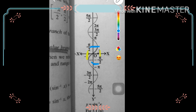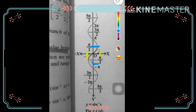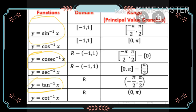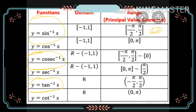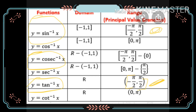This is how we find the domain and range of inverse trigonometric functions. In the table, the circled functions — sin inverse x, cosecant inverse x, and tan inverse x — are three best friends. They always stay together and have similar ranges. The principal value branch of sin inverse x is closed interval minus pi by 2 to pi by 2. The principal value branch of tan inverse x is open interval minus pi by 2 to pi by 2. The principal value branch of cosecant inverse x is closed interval minus pi by 2 to pi by 2, excluding 0.